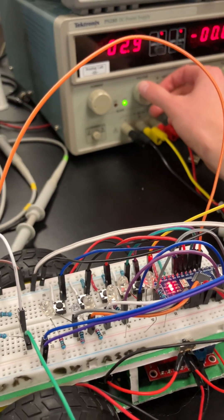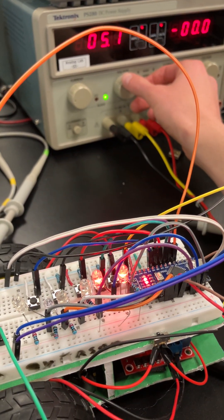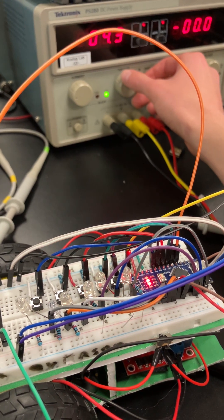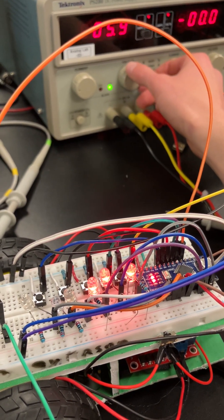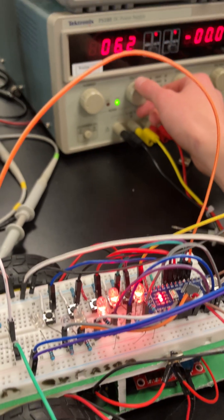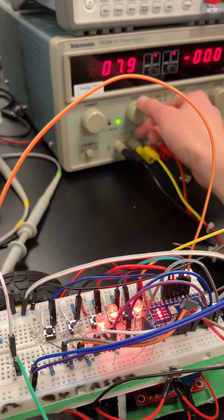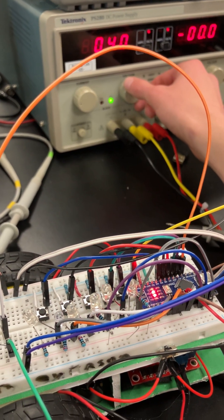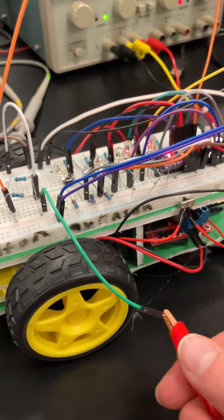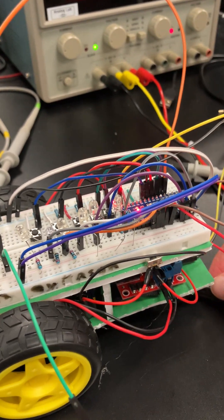As you can see on the power supply - low power, medium power, and high power. The battery's full at six volts. When we turn it down, they all go off. That's the battery. Now I'm going to show off the driving capabilities.